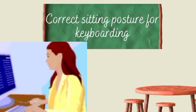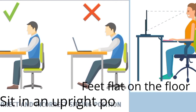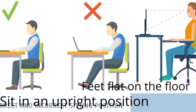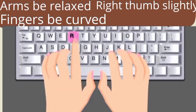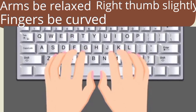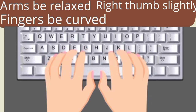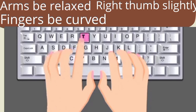I'm going to lay more emphasis on correct sitting posture for keyboarding. Look at the images here. It is right for a good typist to sit in an upright position. Another important posture is to allow the feet to be flat on the floor. When typing or keyboarding, your arms must be relaxed while your hands are placed on the computer keyboard. Let your fingers be curved so that they can slightly touch the home keys. This is very important.